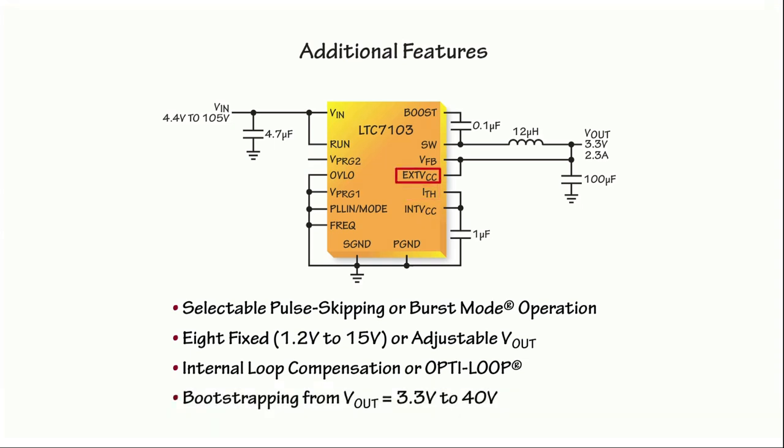For maximum efficiency, the LTC7103 includes a bootstrapped LDO regulator that allows the internal chip bias to be derived from the regulated output voltage. Bootstrapping is automatically activated whenever the external VCC pin is between 3.3V and 40V.